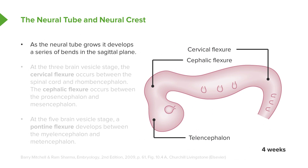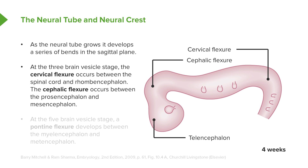Now let's return to the outside and look at the formation of the central nervous system overall. Early on the tube is just a tube, but at the three-vesicle stage we develop a cervical flexure between the spinal cord and the rhombencephalon. We also develop a cephalic flexure between the prosencephalon and the mesencephalon. These folds in the sagittal plane create a kink in the developing neural tube.